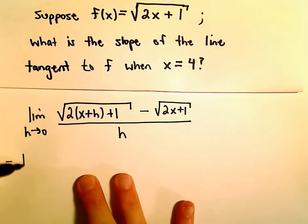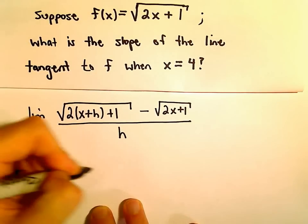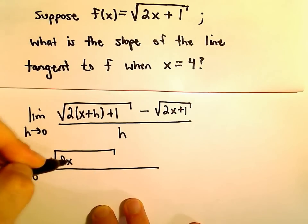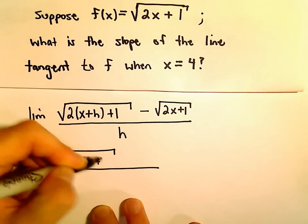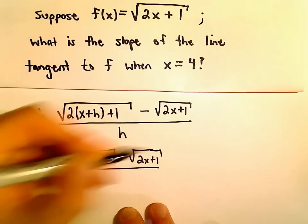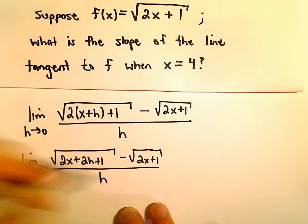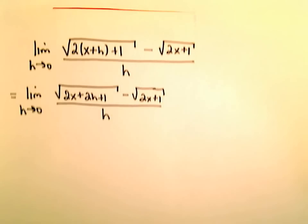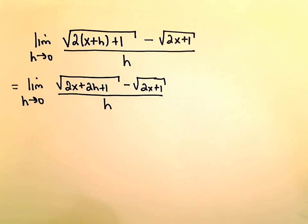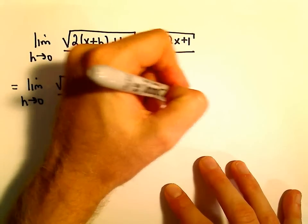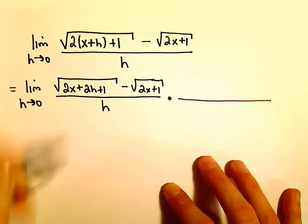What we're going to do next is just simplify. I'm going to go ahead and distribute out underneath the radical, so we would get 2x plus 2h plus 1, minus the square root of 2x plus 1, all over h. We've seen limit problems like this where we have radicals — a lot of times the trick is going to be to multiply by the conjugate, and that's exactly what we're going to do here.